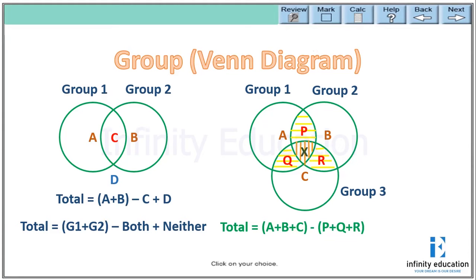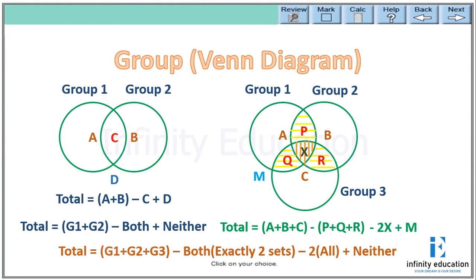That's why it is minus two times X, where X is the number of people belonging from all three groups. And like the two-group formula, if there are M number of people who do not belong from any of the three groups, we have to consider them to get the total. So summing up, the formula is: total equals group one plus group two plus group three, minus both (the exactly-two-set intersections P, Q, R), minus two times all (X, who belongs from all groups), plus neither (M, who belongs from none of the groups).